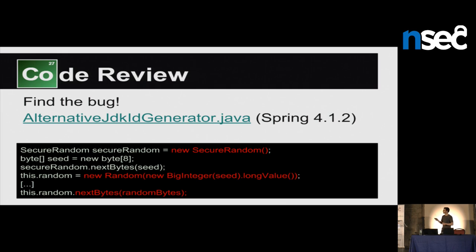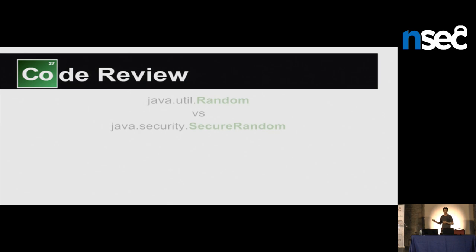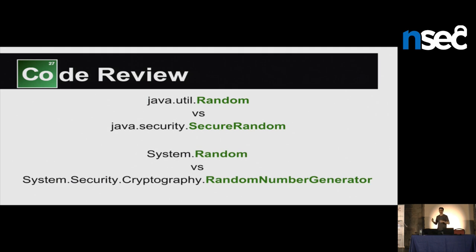To highlight: it was secure random that was used, but in the end the values are generated from a random instance. In other languages the same paradigm exists - we have a random API and a secure random. In C#, you see System.Random, and in the cryptography namespace there's a RandomNumberGenerator. In any language, you'll always have the basic random one that is quickest to use, and then a cryptographically secure API.